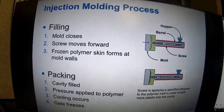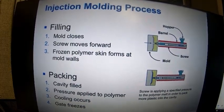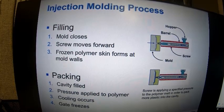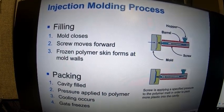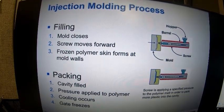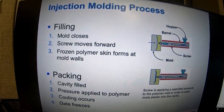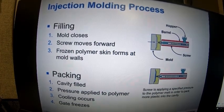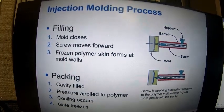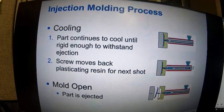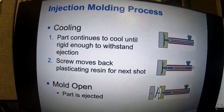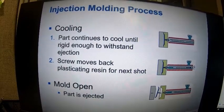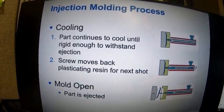Now we'll take a quick look at the injection molding process. This process is typically made up of several phases. The first is filling — the mold closes and the screw moves forward to inject our polymer into the mold cavity, forming a thin skin on the mold wall. Packing finishes filling under pressure control and holds pressure on the polymer as the part cools and the gate freezes off. After packing, we move into the cooling phase, where the part continues to cool until it's rigid enough to be ejected. During this time the screw is typically moving back and plasticating — building up your next shot to save cycle time.